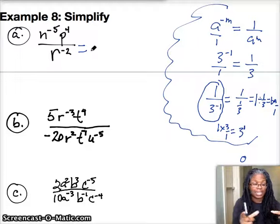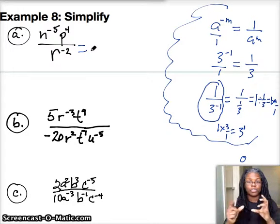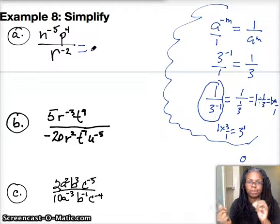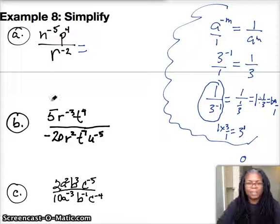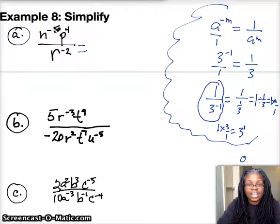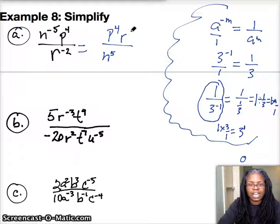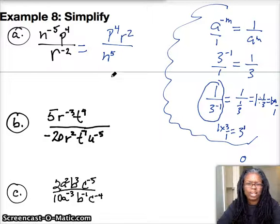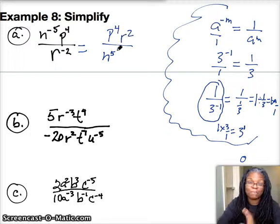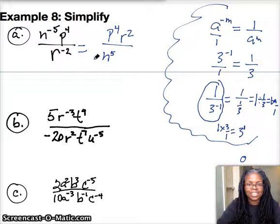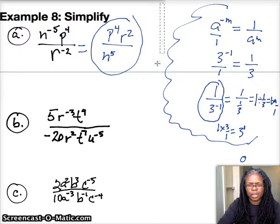With that in mind, when you have a negative exponent in the denominator you move it to the numerator and make that exponent positive. Please, let's talk about it in class if it's not making sense. So here's how it works: n to the negative 5th power drops to the denominator as n to the 5th power; p to the 4th power stays where it is; and r to the negative second power in the denominator moves up to the numerator as r to the 2nd. That's the final answer — there's nothing to join or simplify.